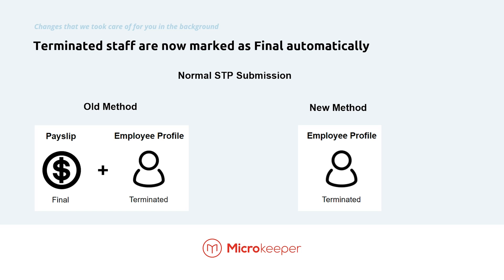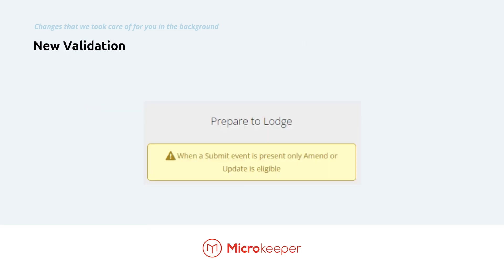Finalizing staff in STP Phase 1 was a bit clunky. The payslip had to be marked as final and the employee had to be terminated in their employee profile. Now, as long as the employee is terminated in their employee profile, they will be included as a final STP submission. There's also much more validation with Phase 2 — you'll probably discover them as you navigate around MicroKeeper.